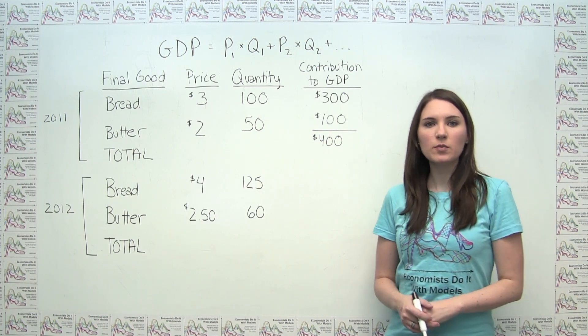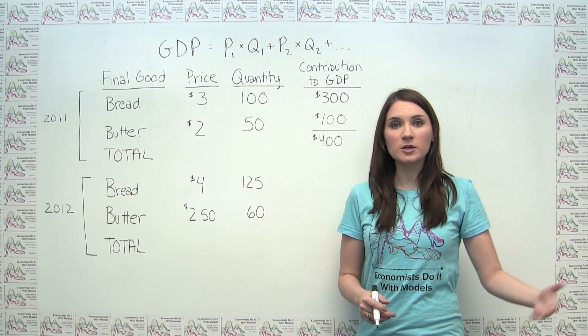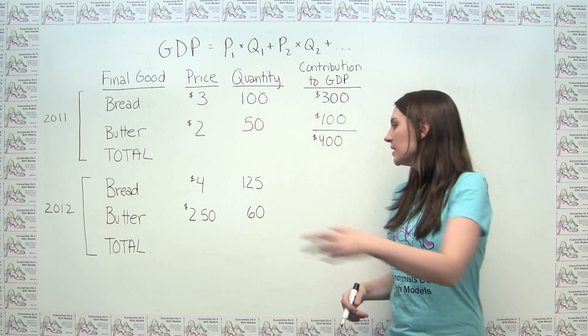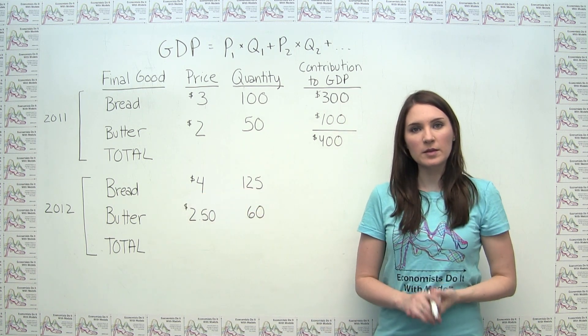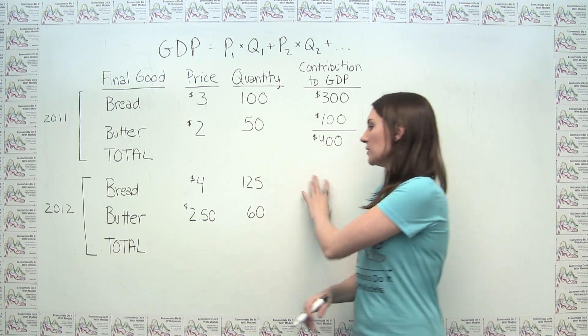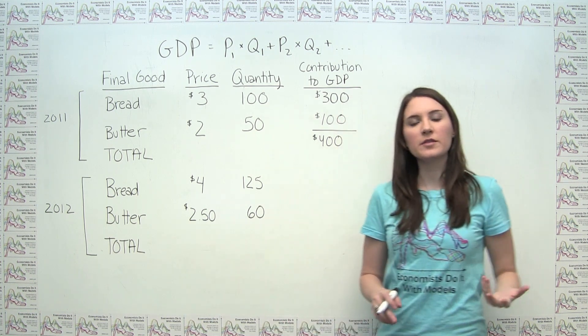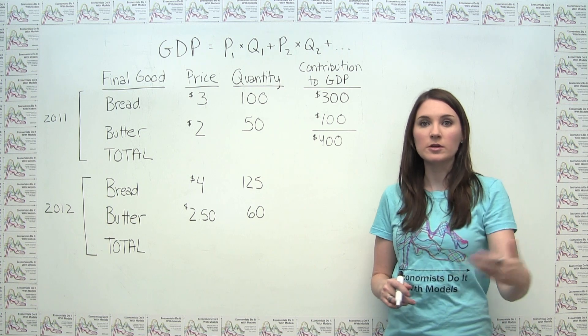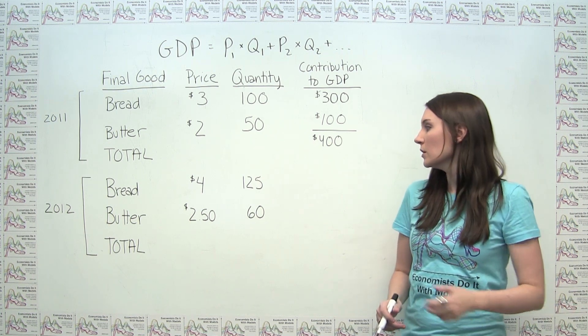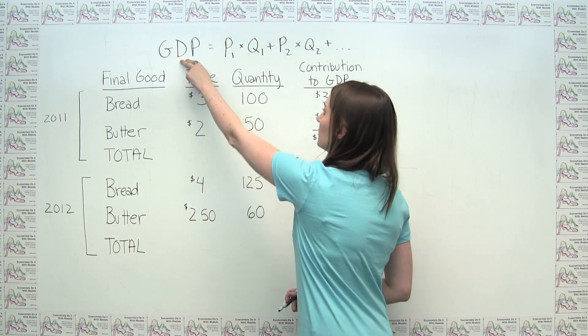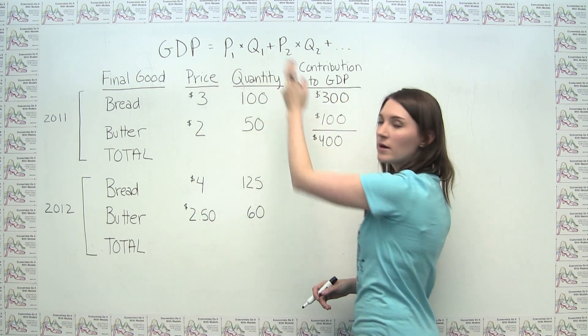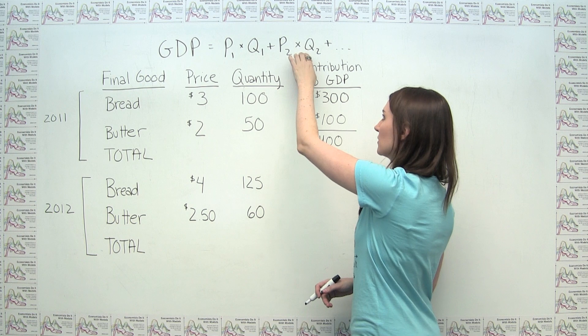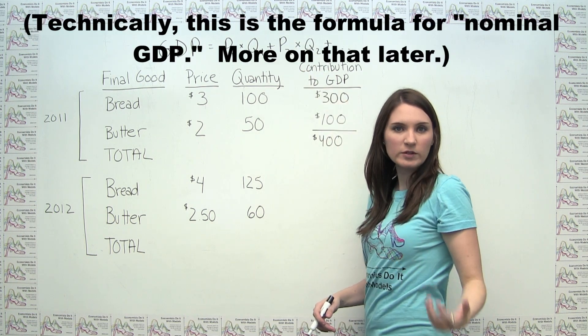In order to illustrate an important point about year-over-year GDP growth, let's take some hypothetical numbers now for the year 2012 rather than the year 2011, and calculate GDP again so that we can think about how to calculate year-over-year changes in GDP. So again, we're just going to use the formula that GDP is equal to the price of the first good times the quantity of the first good, plus the price of the second good times the quantity of the second good, and so on and so forth.